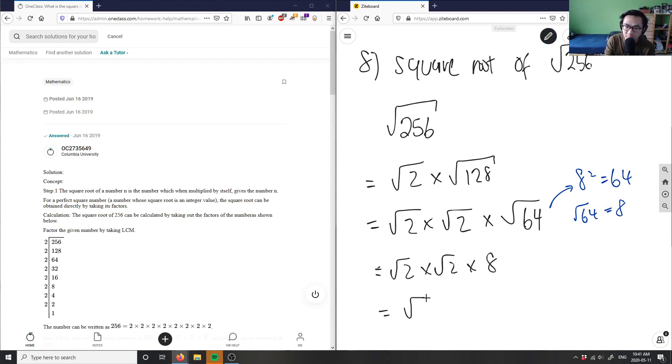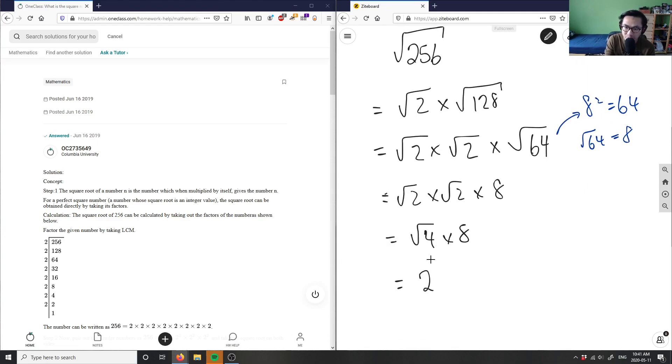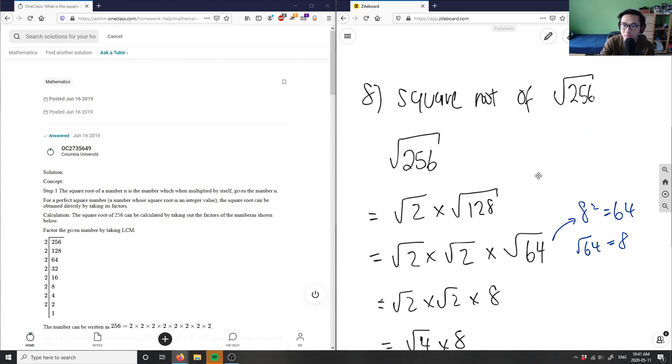I can simplify: root 2 times root 2 is root 4 times 8. The square root of 4 is 2, so 2 times 8 equals 16. This is my answer for this problem. The square root of 256 equals 16.